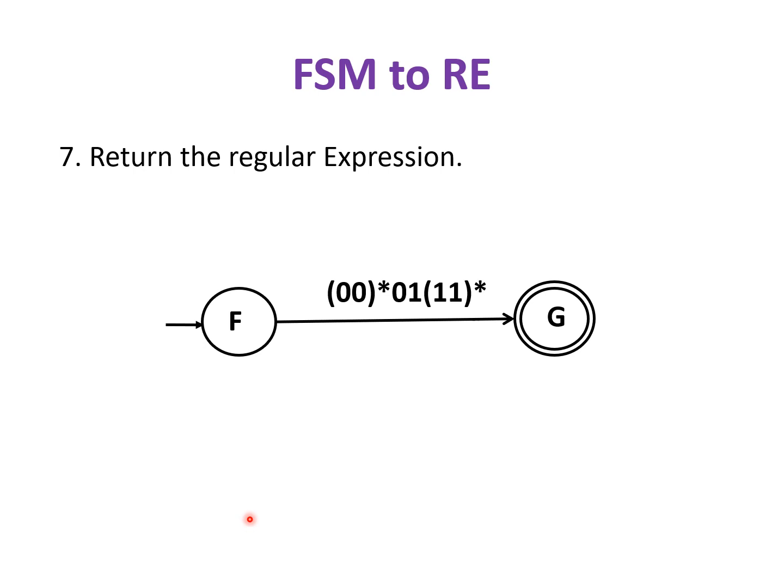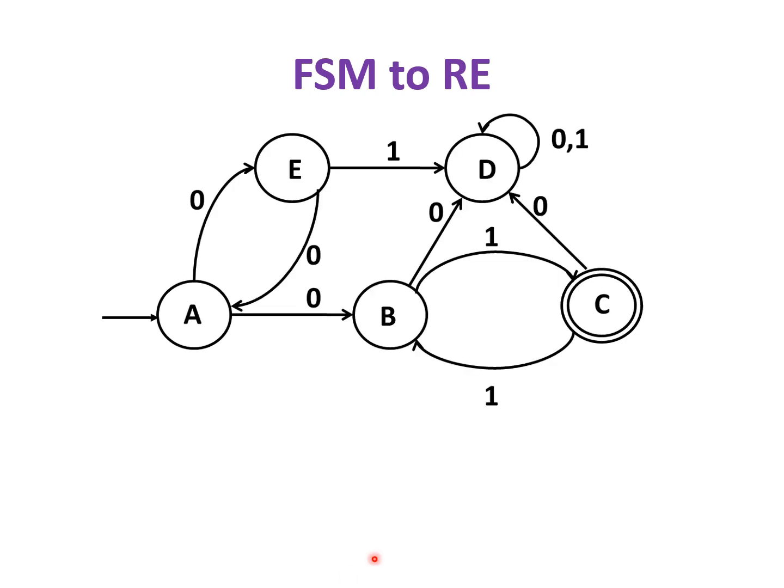At this phase, we can see that all intermediate states other than the start state and the accepting state are ripped. Then, the final regular expression obtained is (00)*01(11)*. Finally, this is the regular expression obtained or built from the given finite state machine. Thank you.